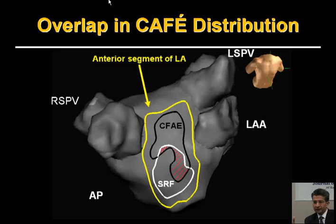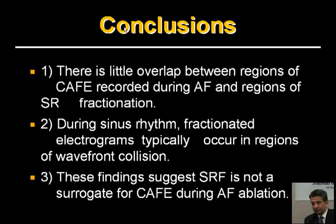We also showed that complex electrograms during sinus rhythm are usually found in areas of wavefront collision, even in sinus rhythm. Based on our findings, our conclusion is that sinus rhythm fractionation is not a surrogate for the complex fractionated electrograms observed during atrial fibrillation — the overlap in regions, if it exists at all, is extremely small.